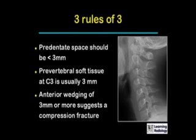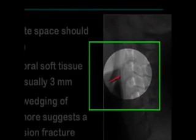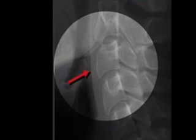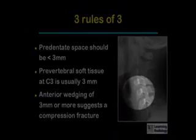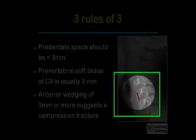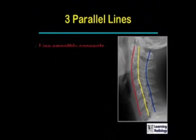The pre-vertebral soft tissue at the level of C3 is usually less than three millimeters. Anterior wedging of three millimeters or more of a vertebral body suggests the presence of a compression fracture.